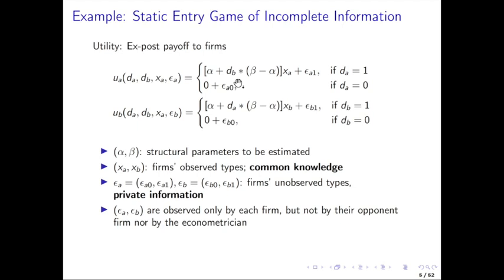Firm A does not observe, at the point when they make their decision, whether firm B is in the market — they're making those two choices simultaneously. The epsilon shocks are private information: each firm observes its own shock but not its opponent's. This is also the error term in the model once we start deriving the likelihood. The X variables, on the other hand, are common knowledge.